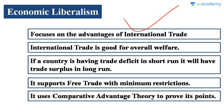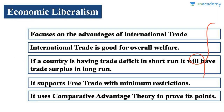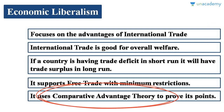Economic liberalism supports free trade. It advocates the removal of all types of restrictions and all types of barriers stopping international trade. The theory of economic liberalism uses another theory to support its propositions — that theory is called comparative advantage theory, developed by Adam Smith and David Ricardo around the 18th century.